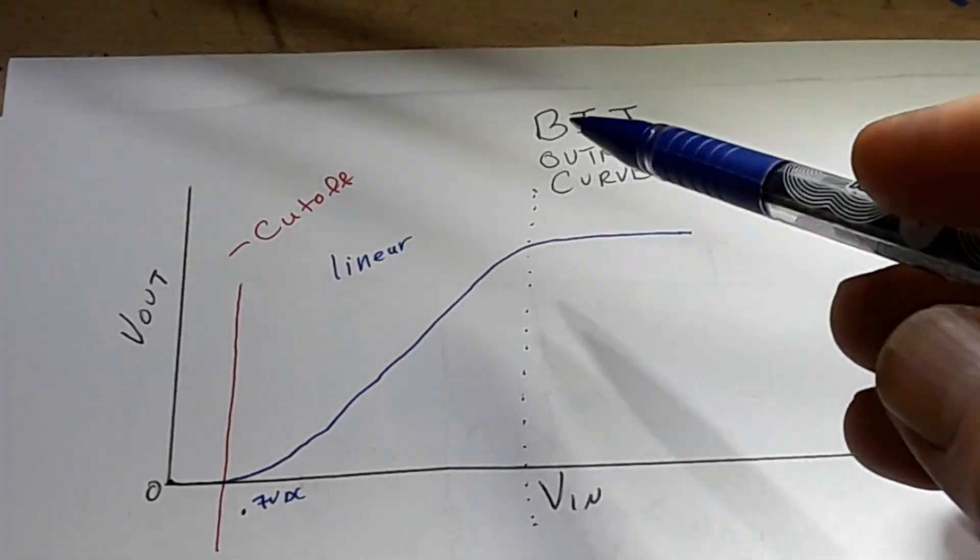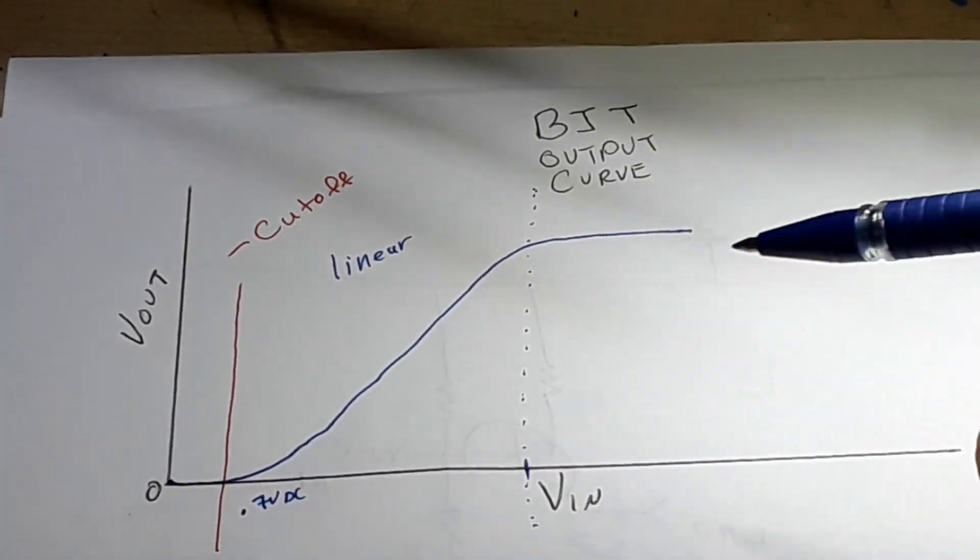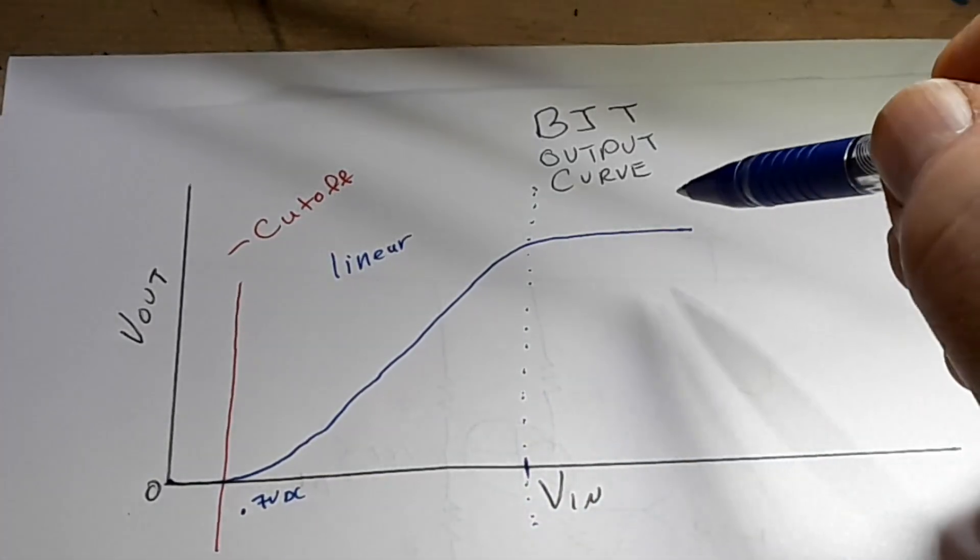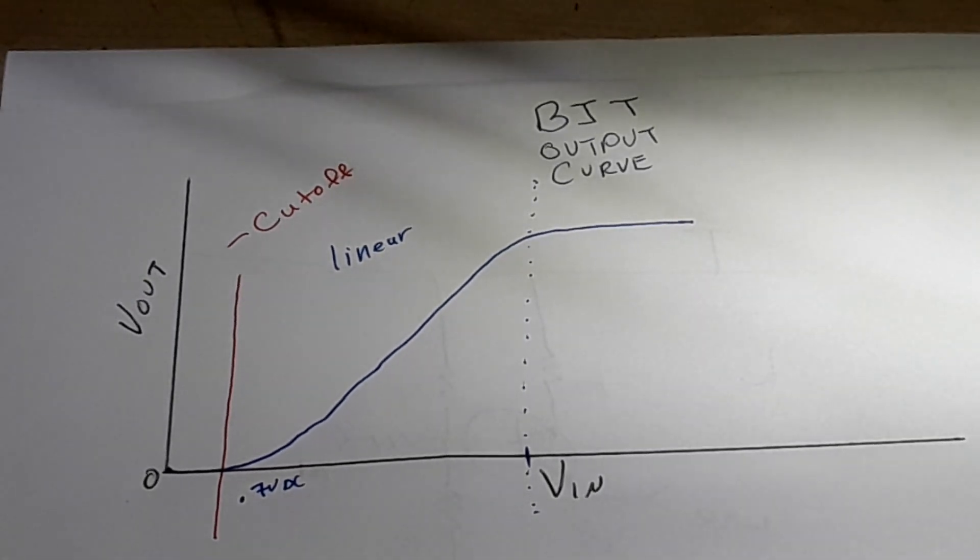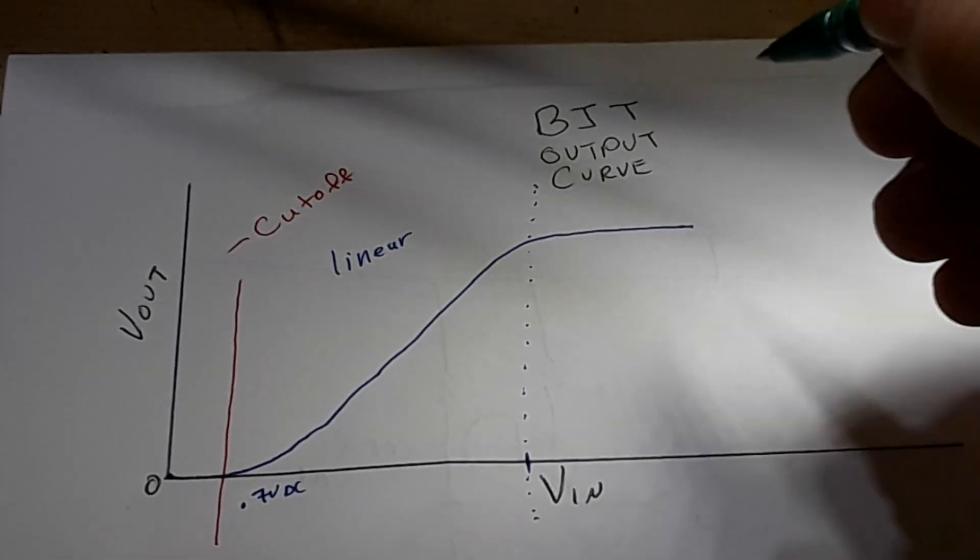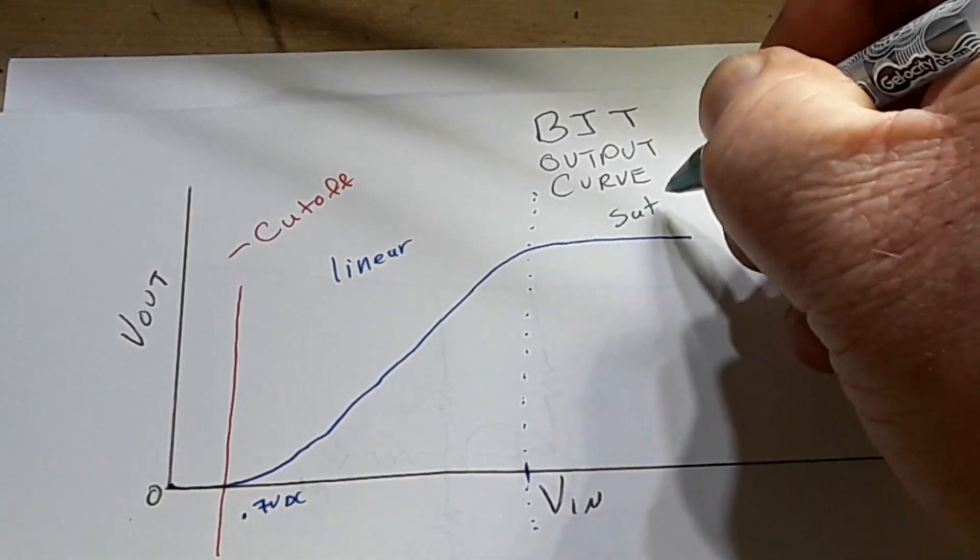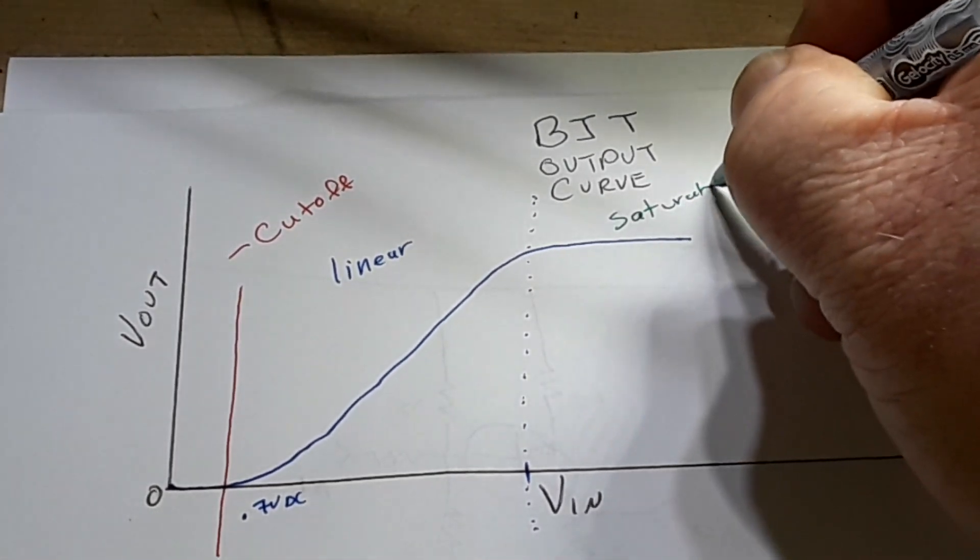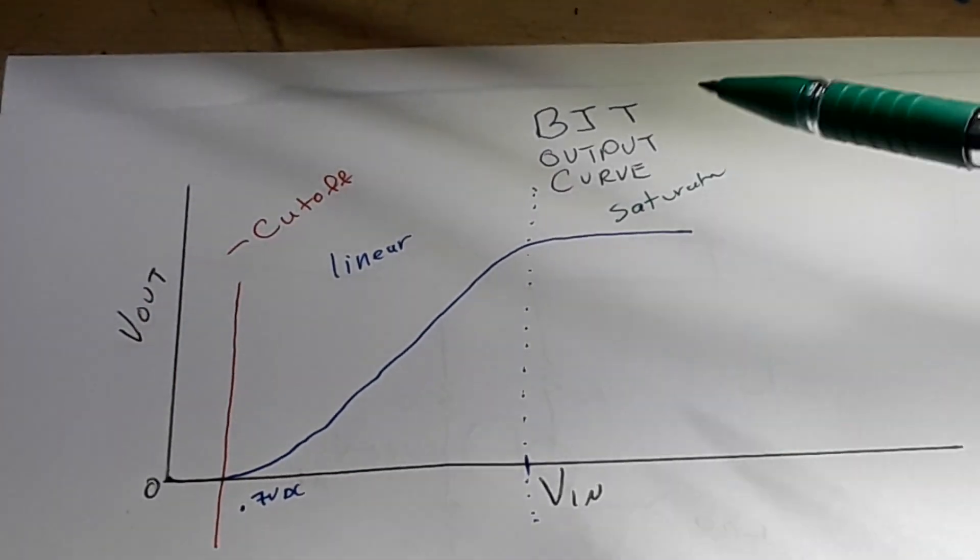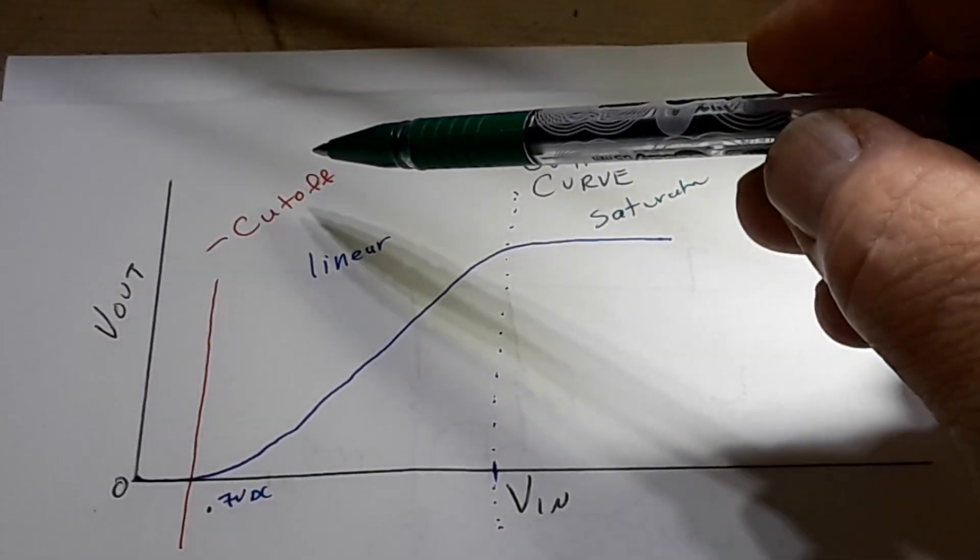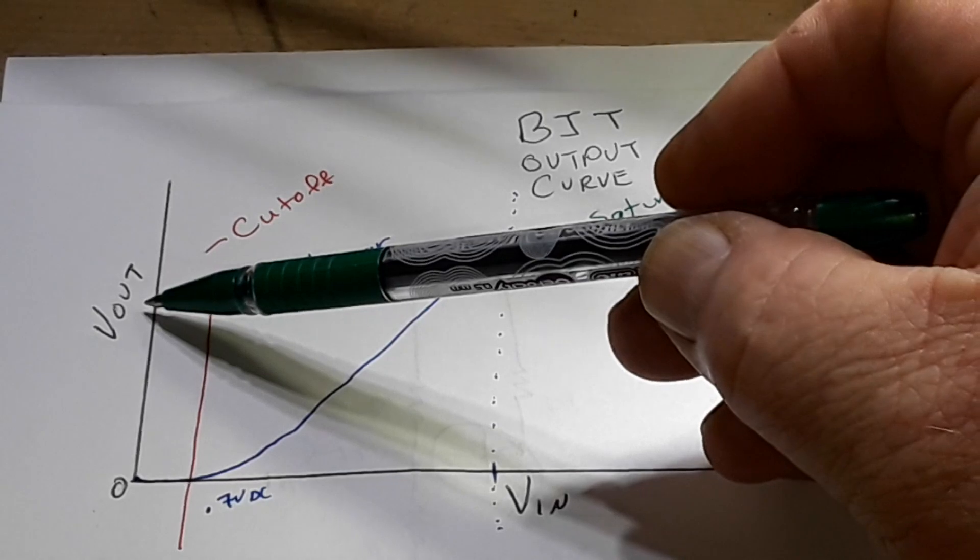And we see as the voltage keeps climbing until we actually reach this point here, we have a climbing output voltage. And this region is called the linear region. This is the magic zone where you can get all the good work out of a transistor.